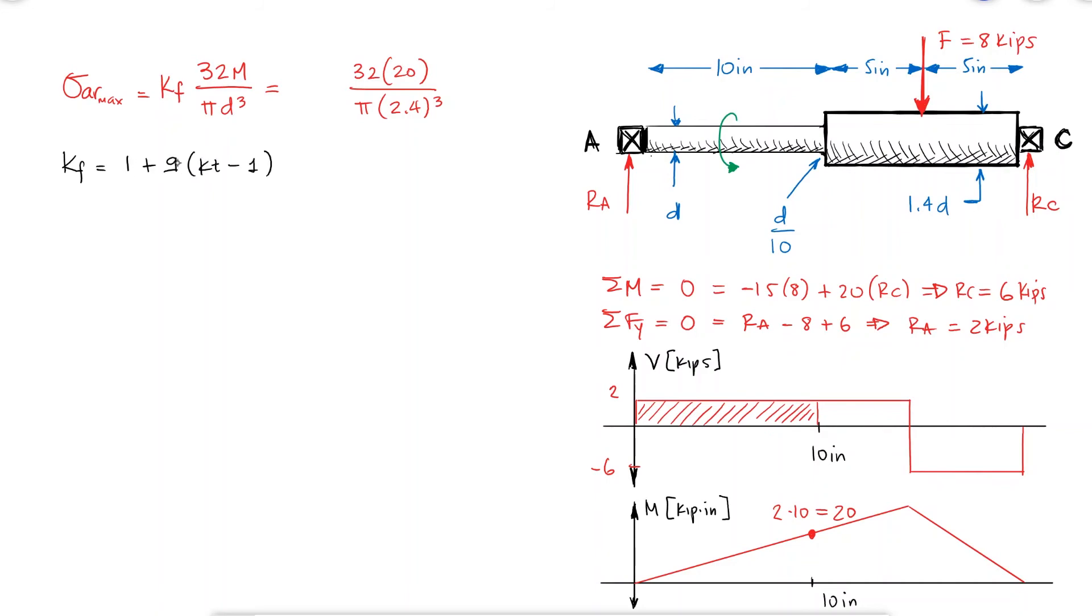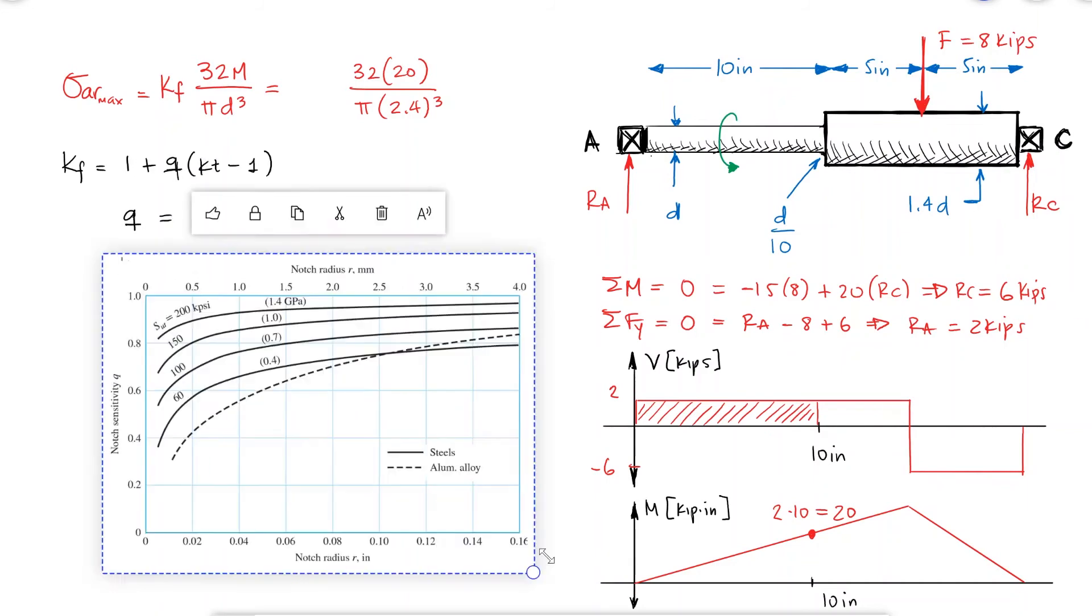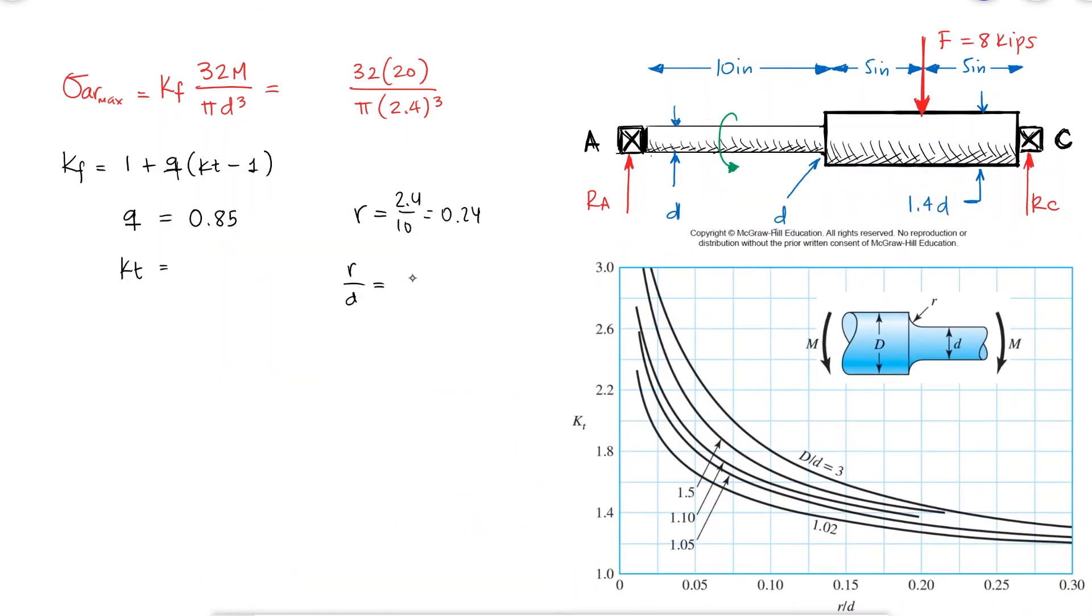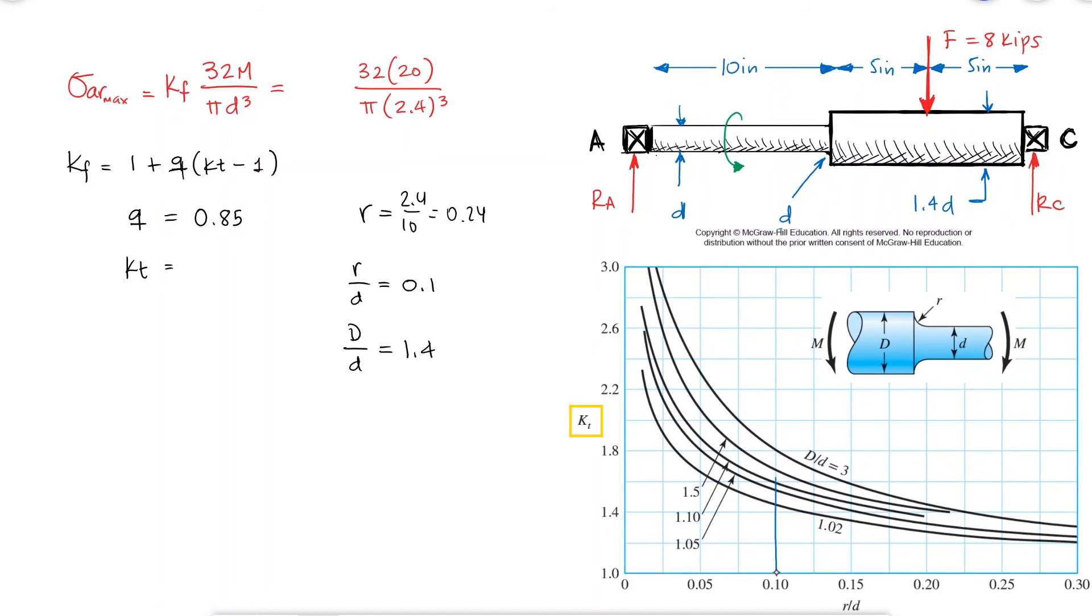The fatigue stress concentration depends on q and kt, like we've seen before, which depend on the notch radius and the ultimate strength for q, and the notch radius to smaller diameter ratio, and the two diameter ratios for the static stress concentration factor for a round shaft with shoulder fillet and bending.